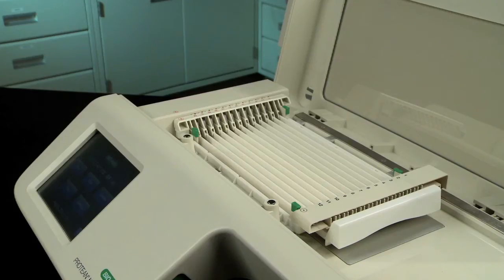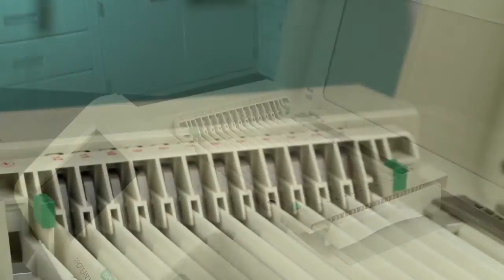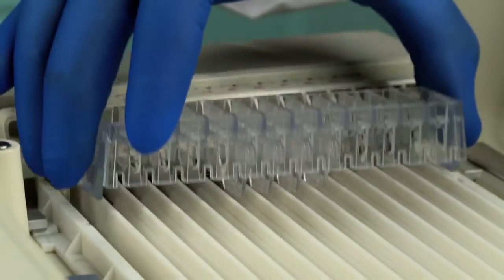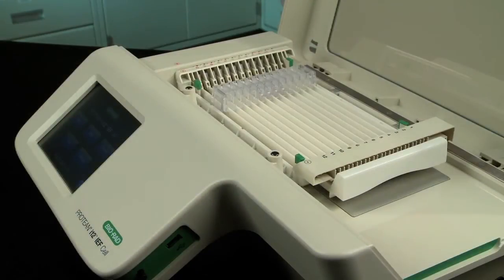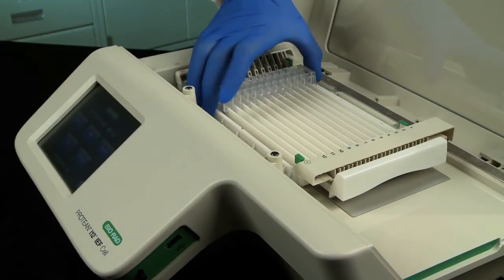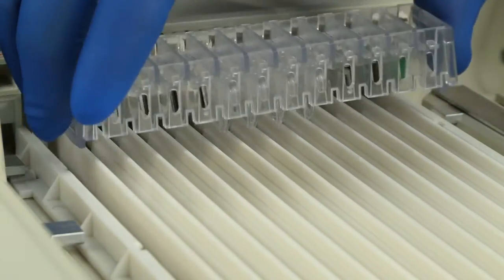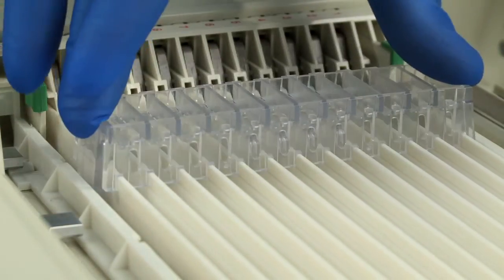Choose the desired location for the sample cup assembly. Snap the assembly onto the tray until a click is heard. Once the assembly is in place, do not slide it along the tray as it will damage the IPG strip. If you would like to reposition it, unclip the assembly, pick it up, and reposition it on the strip.